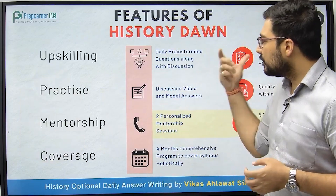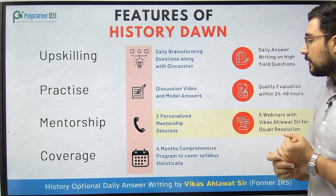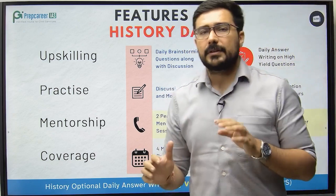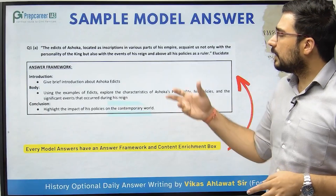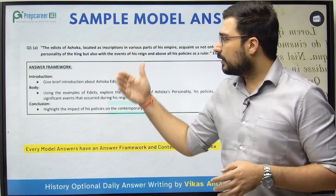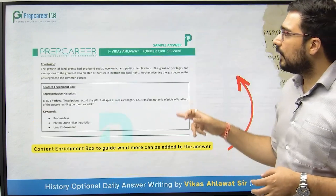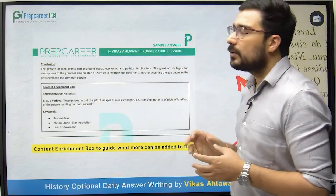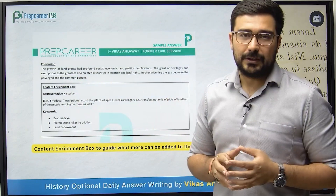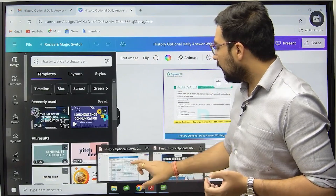The features included in this program are: daily brainstorming, writing answers daily, discussion videos, model answers, personalized mentorship sessions, and a four-month program duration. Within 48 hours, we try to get your evaluated copies back to you. For every question, you will get an answer framework clearly explaining what to write in the introduction, body, and conclusion. The answer remains structured throughout, and the conclusion includes a content enrichment box showing how historiography and historians should be incorporated.